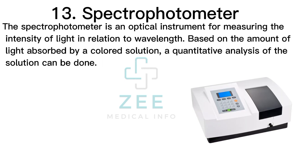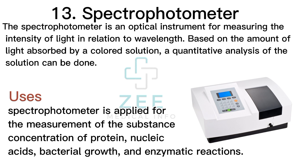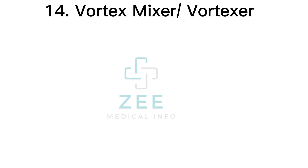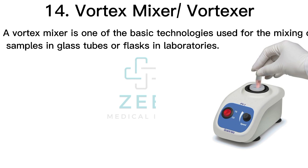A spectrophotometer is an optical instrument for measuring the intensity of light in relation to wavelength. Based on the amount of light absorbed by a colored solution, a quantitative analysis of the solution can be done. It is applied for the measurement of substance concentration of protein, nucleic acid, bacterial growth, and enzymatic reactions.